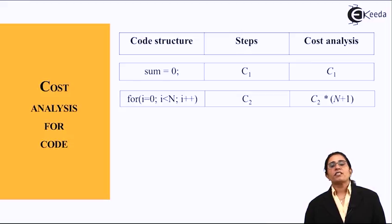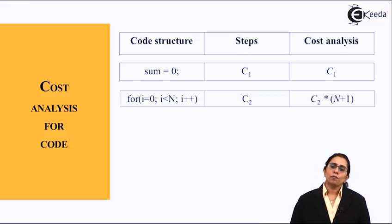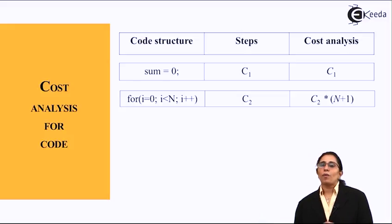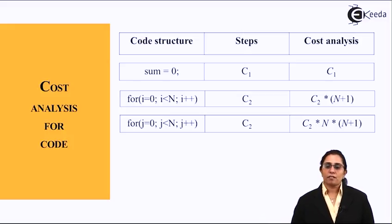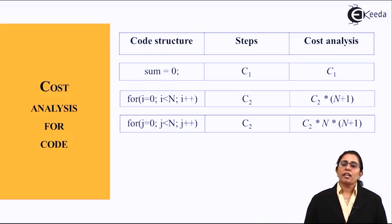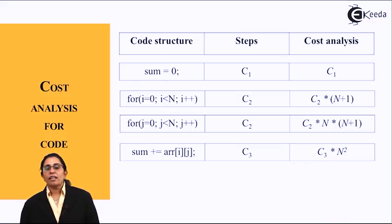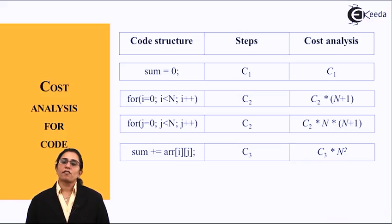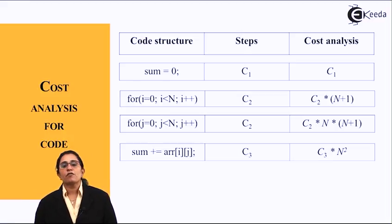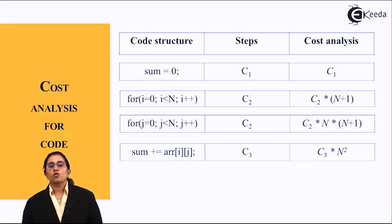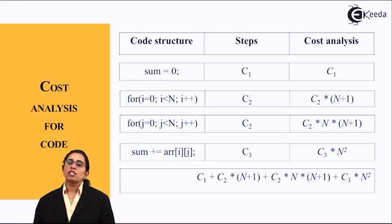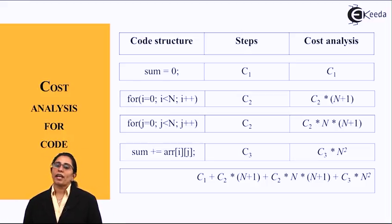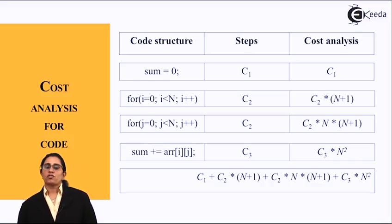The next step is the outer for loop: for i = 0; i < n; i++, given cost c2, with total cost c2 × (n+1). The inner for loop: for j = 0; j < n; j++, also cost c2, with cost c2 × n × (n+1). The assignment statement sum += a[i][j] is given step c3, costing c3 × n². The total cost is c1 + c2(n+1) + c2·n(n+1) + c3·n².